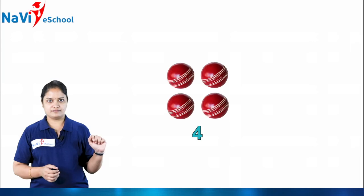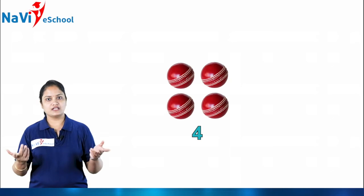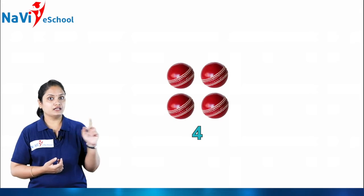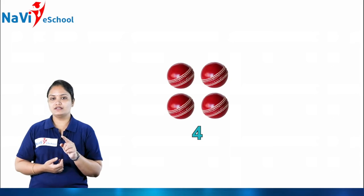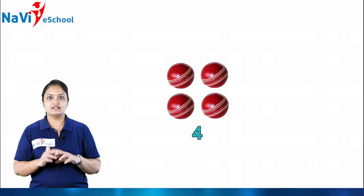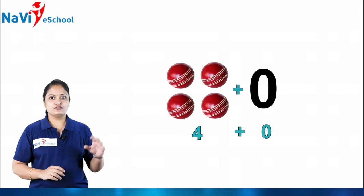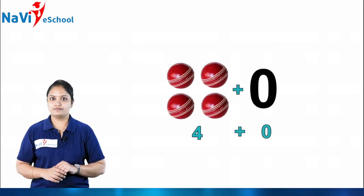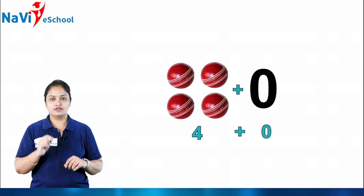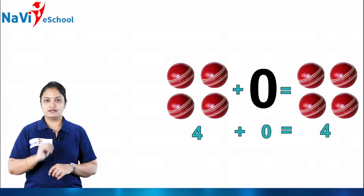Here I have four balls, and over there I don't have any ball. Then what is the sum — what is the addition of these two? There is nothing, which means we write it as zero. You might have watched the previous video where we learned this. So four balls here and no ball there means: instead of nothing, write zero. So four plus zero gives you — is equal to four only.